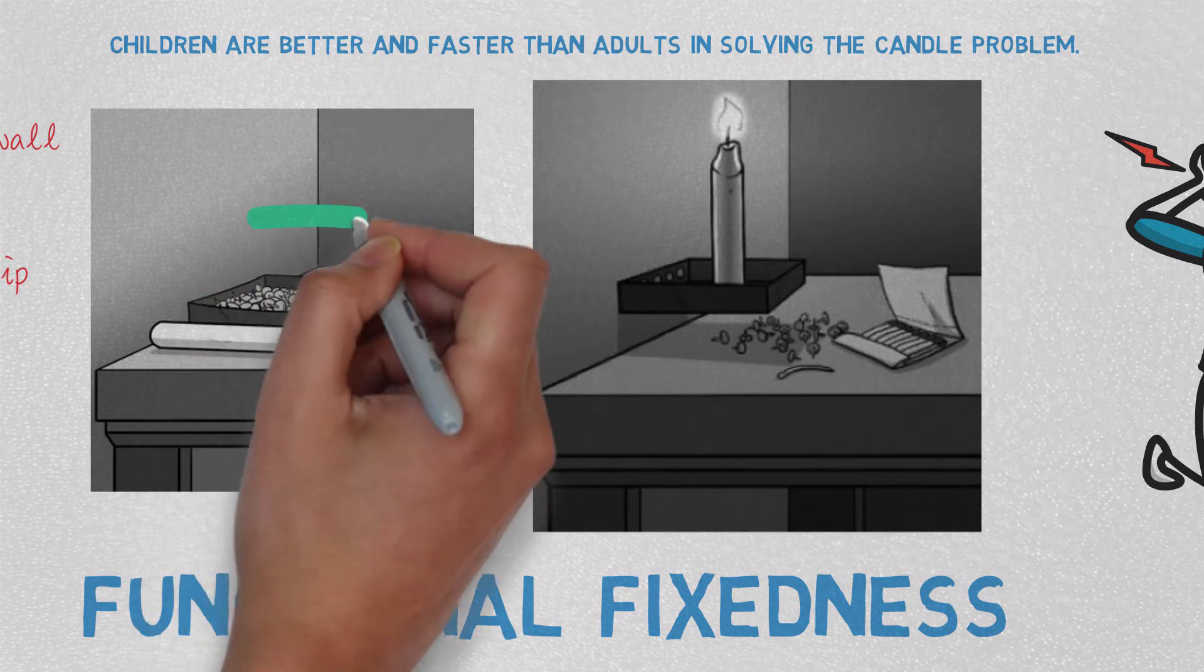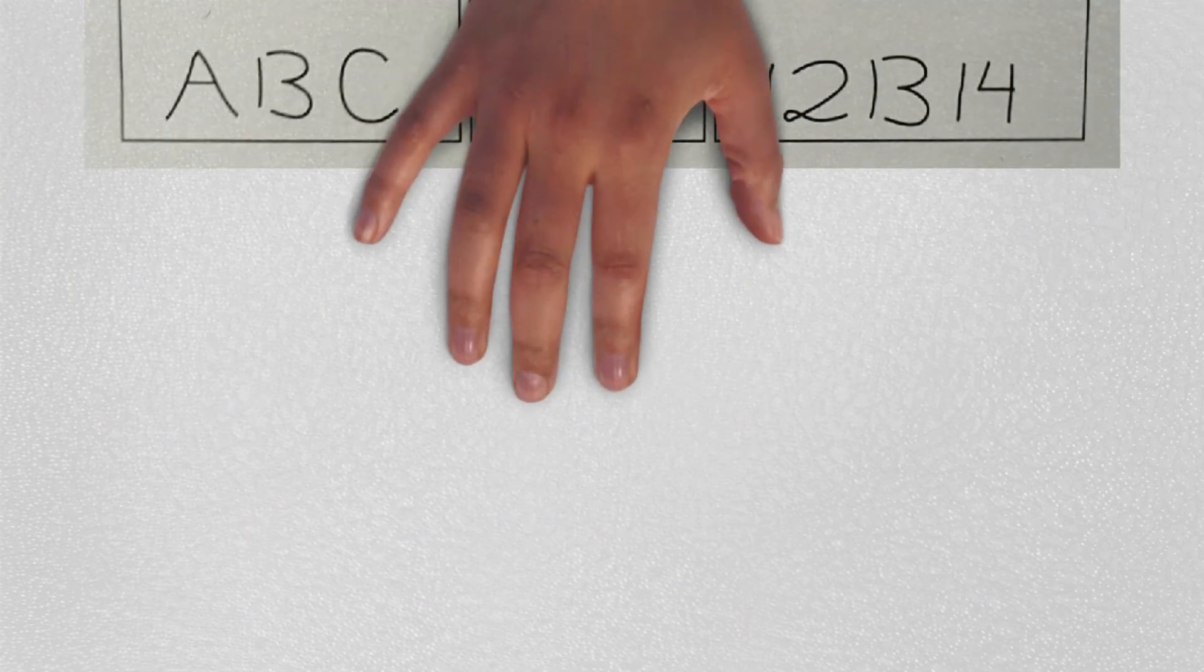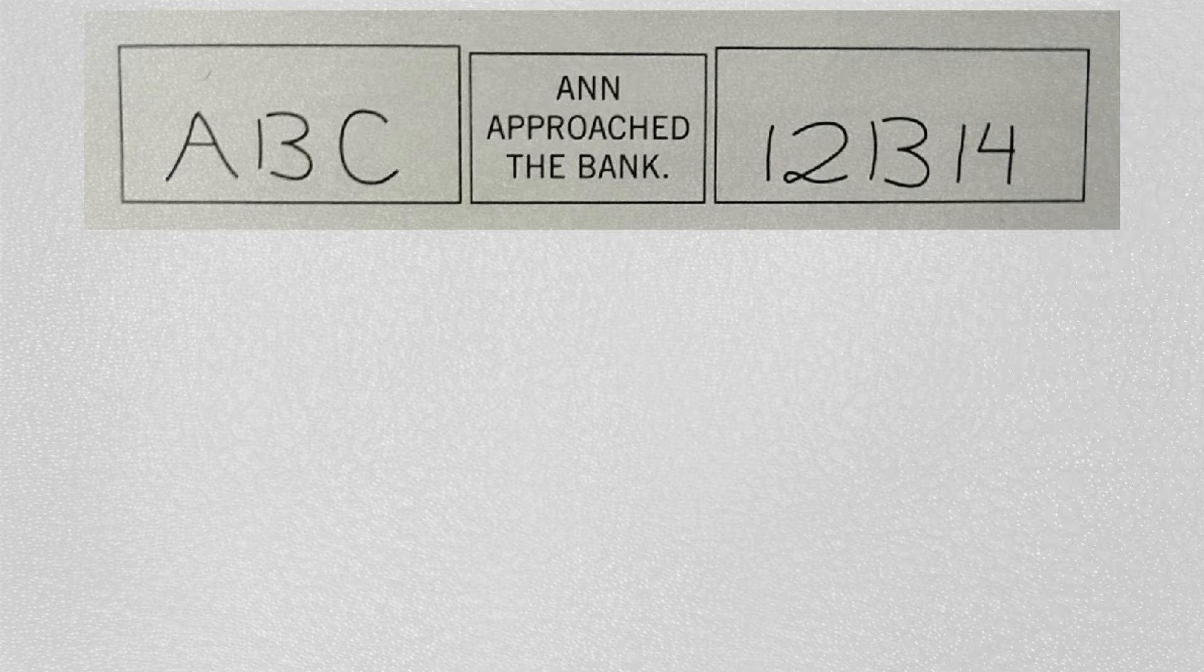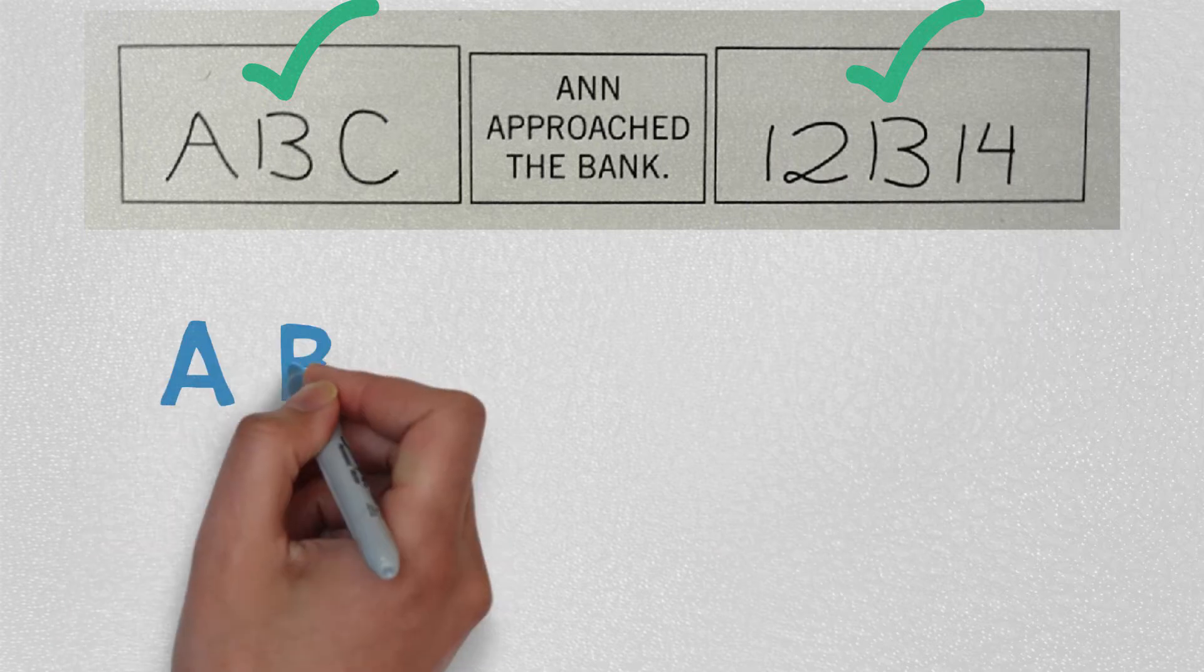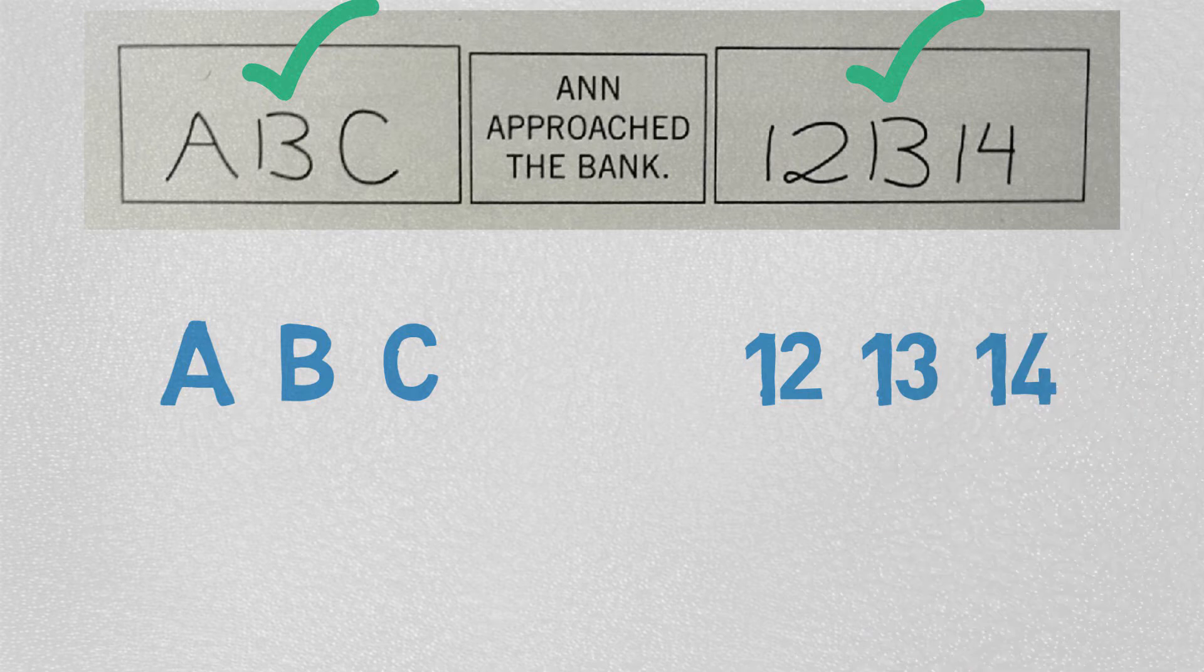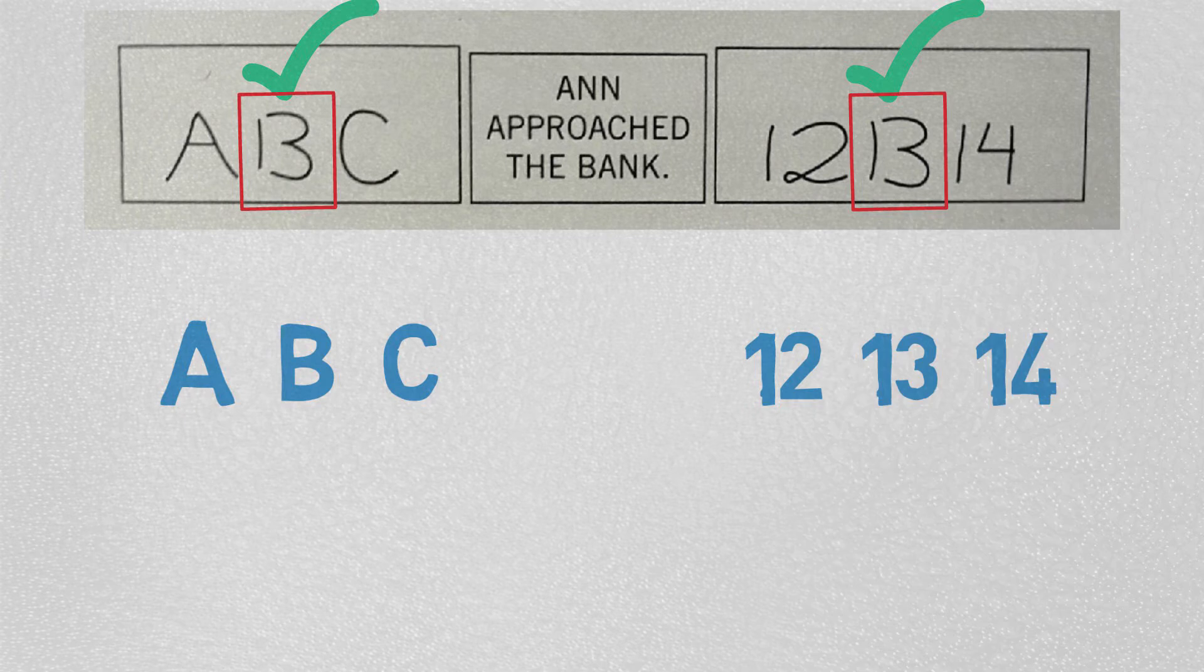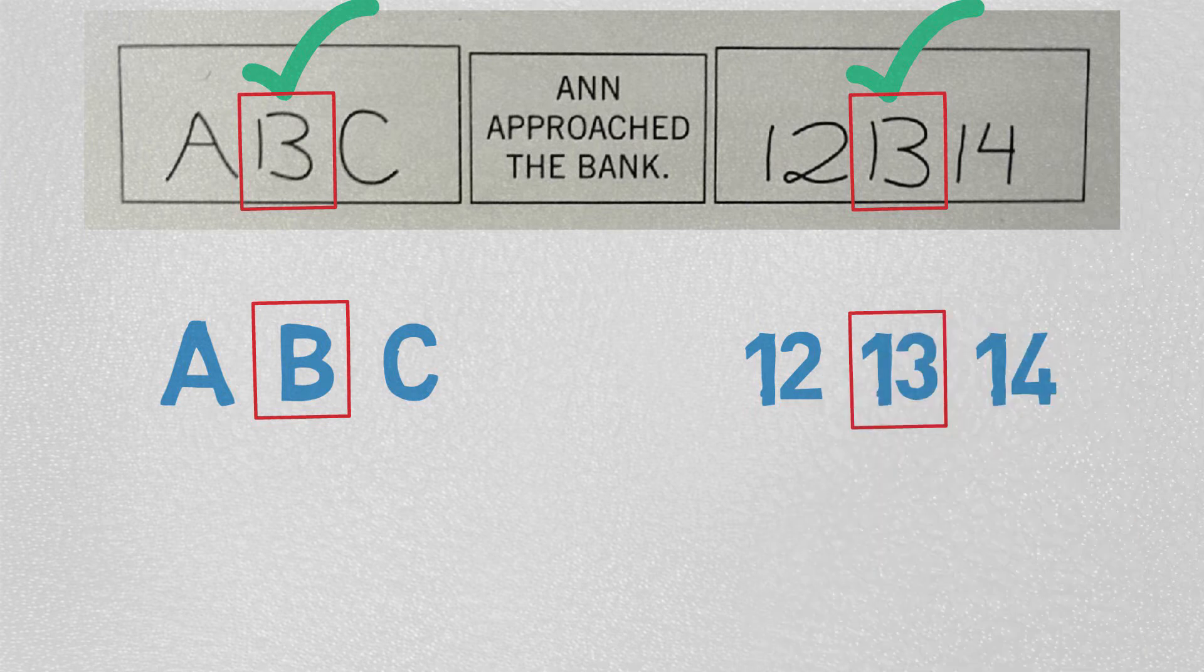Take this test: can you please read what's inside all three boxes? Let's talk about the first and third boxes. I guess you read the first box as ABC and the third one as 12, 13, and 14. Did you realize the middle item on both boxes is the same? But why did you read the same item as B in the first box and as 13 in the third box?